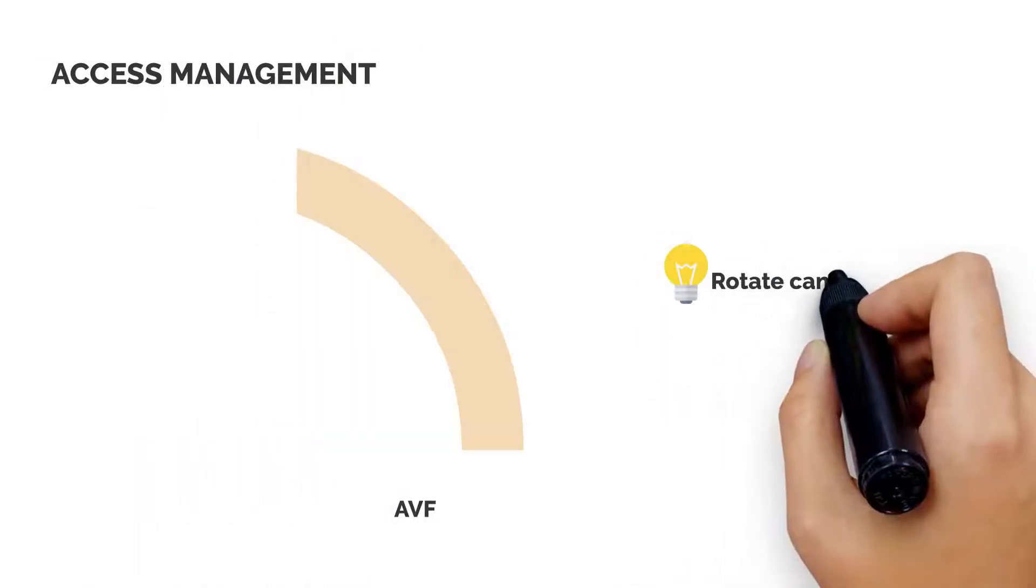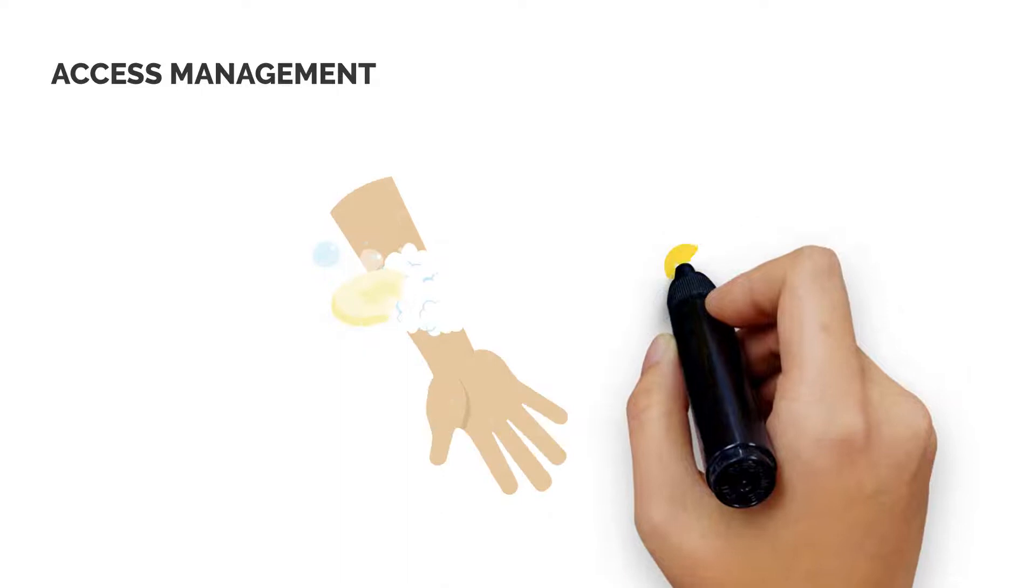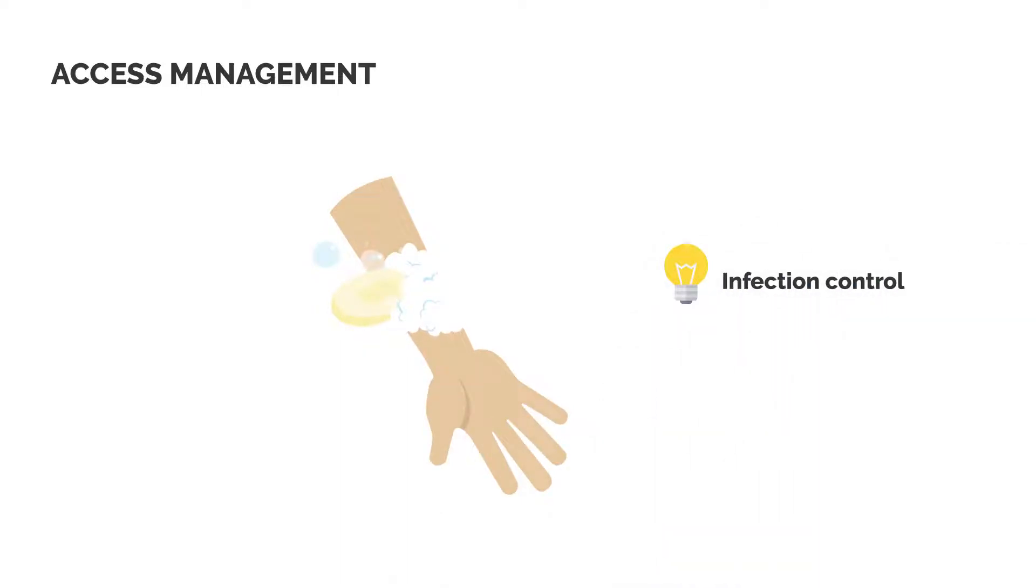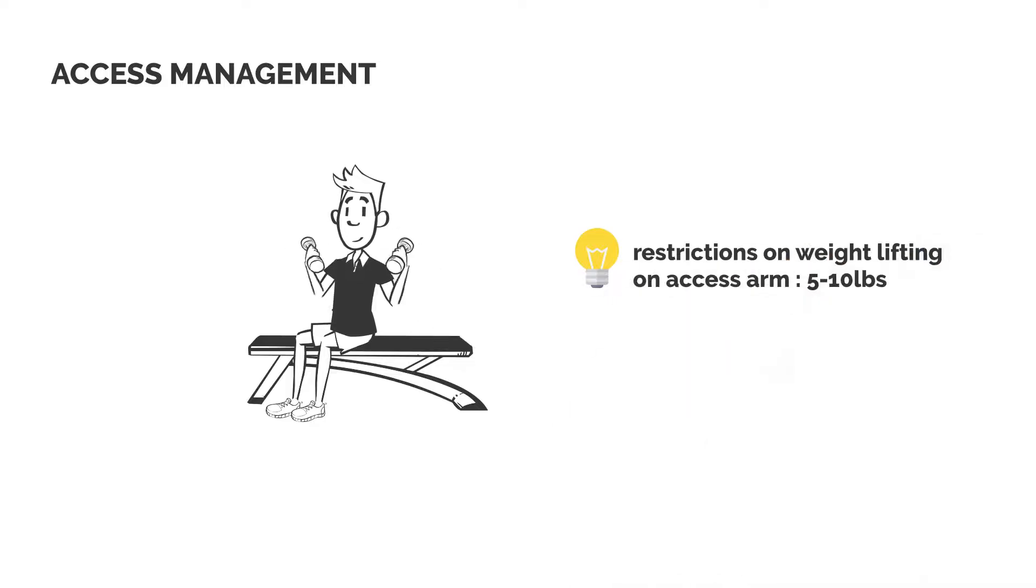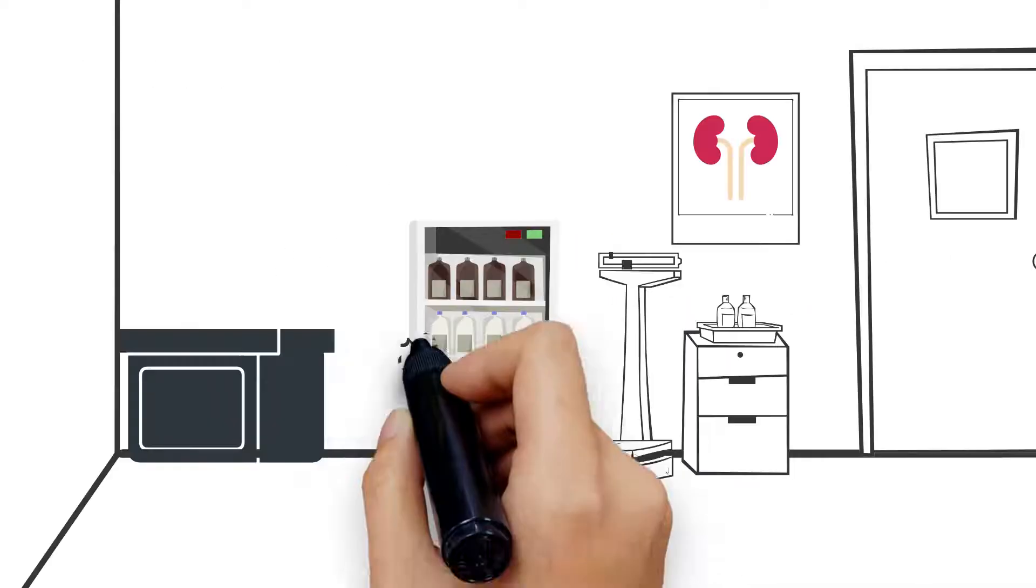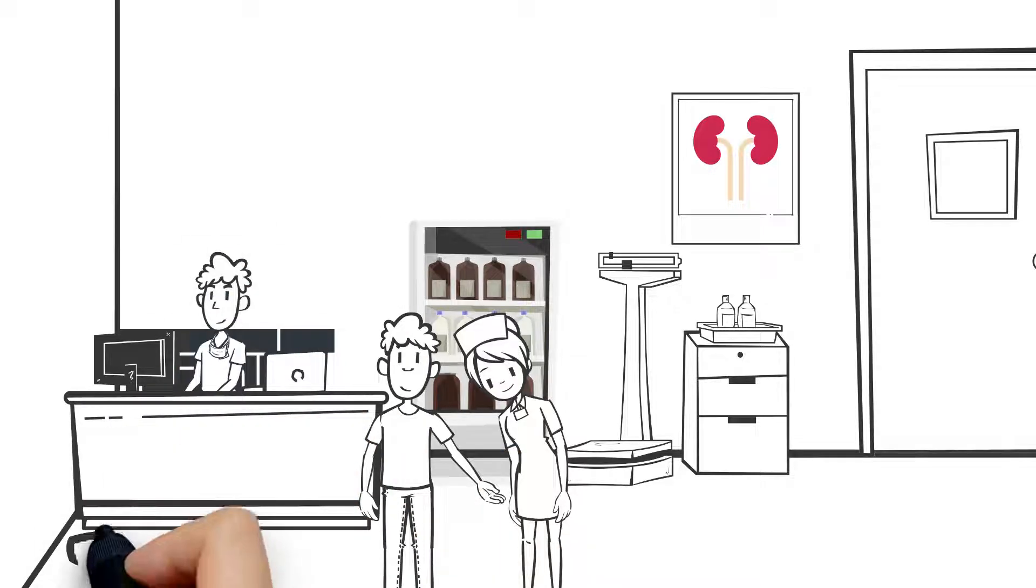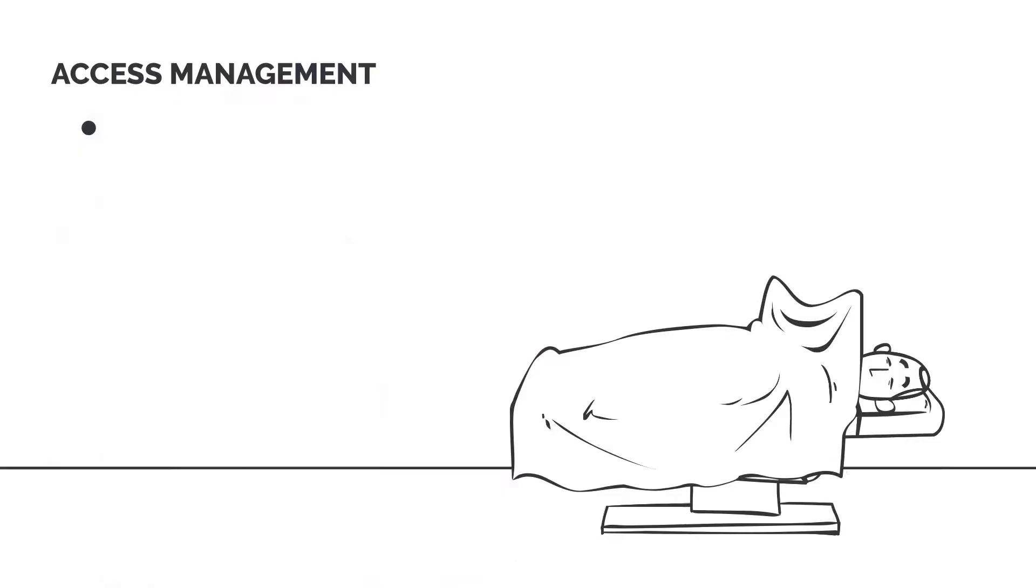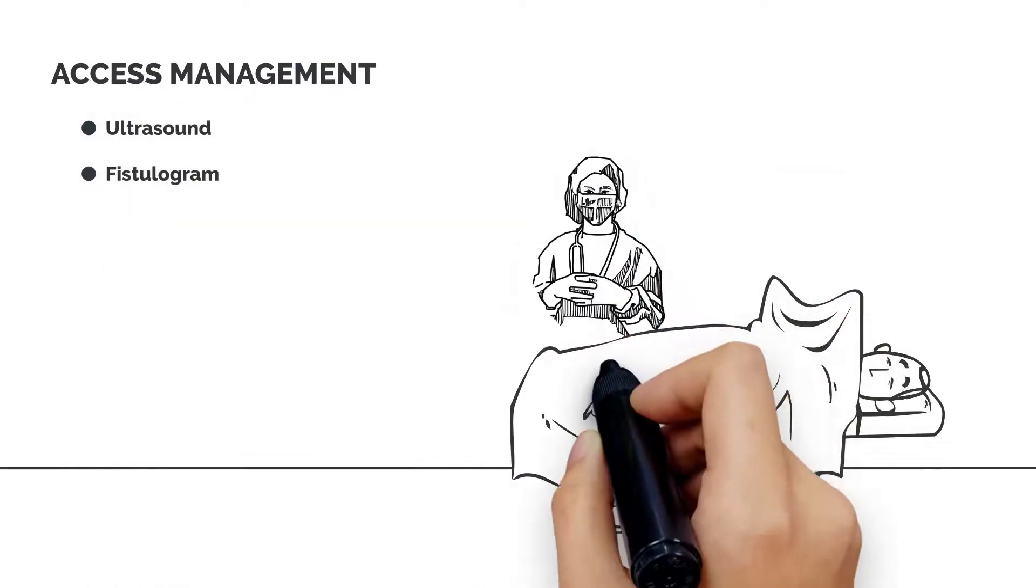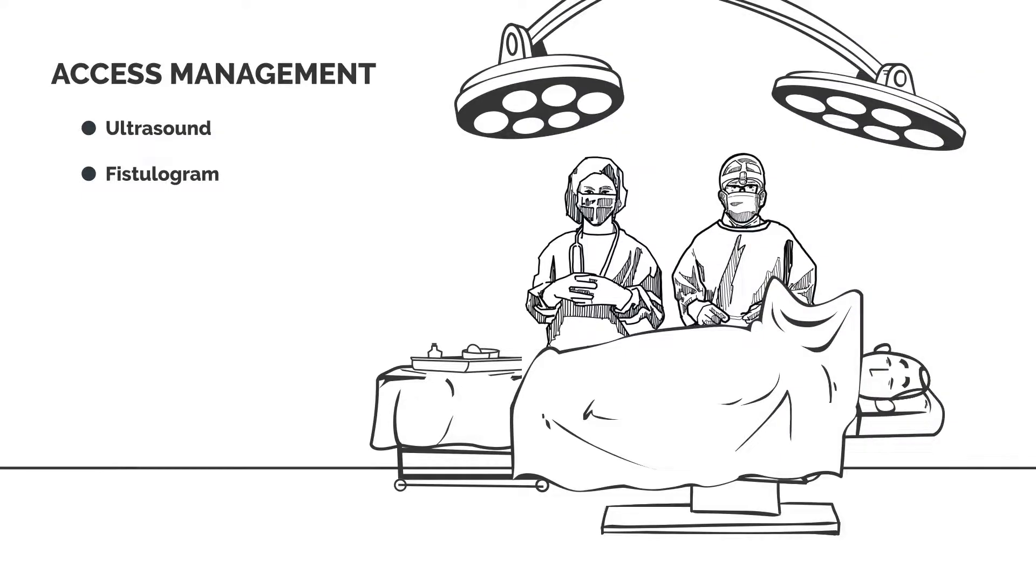Access management involves cannulation techniques by rotating cannulation sites, infection prevention by cleaning the access through aseptic technique, and limiting lifting to five to ten pounds on the access arm to prevent extra strain. If nurses assess any potential issues with the access, a kidney doctor or nephrologist may recommend diagnostic tests or procedures such as an ultrasound or a fistulogram.